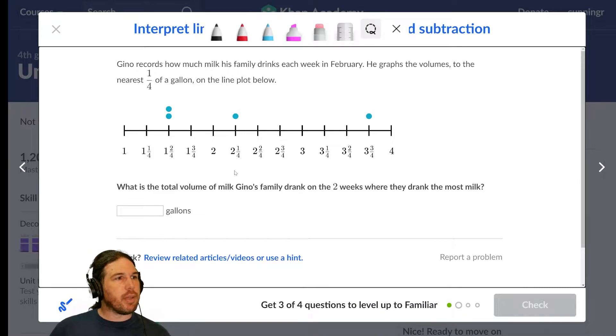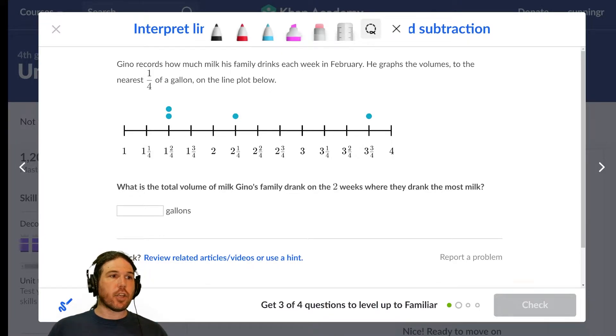Gino records how much milk his family drinks each week in February. He graphs the volumes to the nearest one fourth of a gallon on the line plot below. What is the total volume of milk that they drank on the two weeks when they drank the most milk? Okay, so this one's kind of tough to parse. A lot of this level of math is reading comprehension, which I know is a big deal for a lot of students. You need to know what it is they're asking. We need to know which of these points are they talking about and what are we supposed to do with those points? So it says on the two weeks where they drank the most milk. That tells me we're looking at that point and that point.